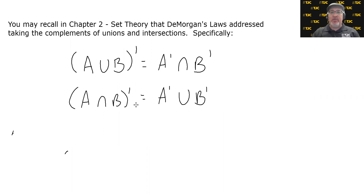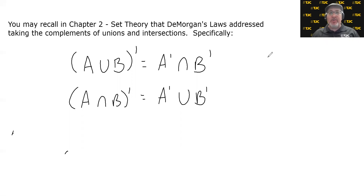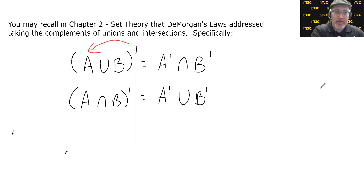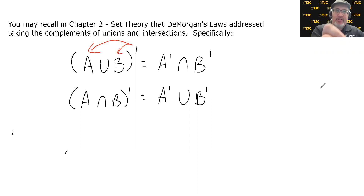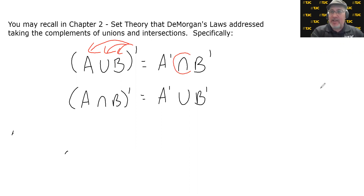The other of DeMorgan's Laws looks pretty much the same, except the union and intersection are reversed. The complement of the intersection of A and B is equal to A complement union B complement. The complement gets distributed to both A and B, but the operator in the middle changed — almost as if the complement went to the union and said 'change,' and it became an intersection.